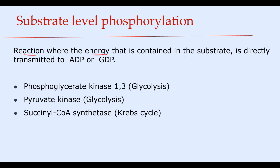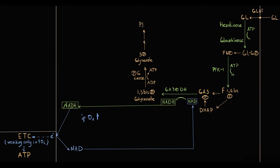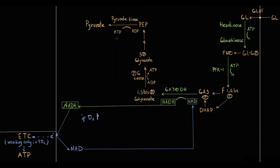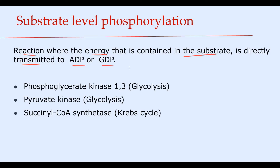In substrate-level phosphorylation, the energy contained in the substrate is directly transmitted to ADP or GDP. Then, in two consecutive steps, 3-phosphoglycerate is converted into phosphoenolpyruvate. Phosphoenolpyruvate, in a reaction catalyzed by pyruvate kinase, directly phosphorylates ADP, releasing ATP and forming pyruvate — the second example of substrate-level phosphorylation. Overall, there are three reactions of substrate-level phosphorylation: the first catalyzed by phosphoglycerate kinase forming 3-phosphoglycerate, the second by pyruvate kinase forming pyruvate, and the third in the Krebs cycle where succinyl-CoA synthetase converts succinyl-CoA to succinate. Two occur in glycolysis and one in the Krebs cycle.